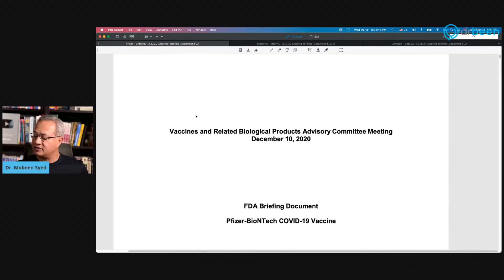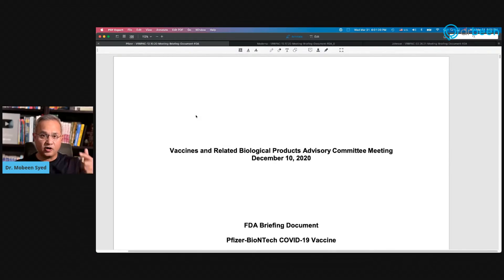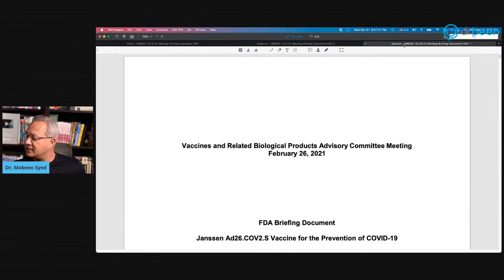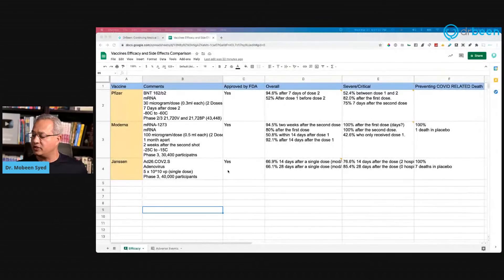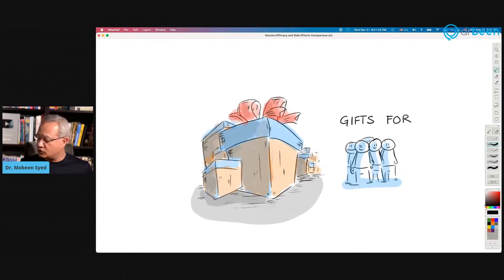So here we have the Pfizer-BioNTech trial results. We have gone over this in detail in the past. I've just put them together for comparison. Here is the FDA briefing document for Moderna, and this one is the FDA briefing document for Johnson & Johnson's Janssen vaccine. I have collected those data points here in an Excel sheet and illustrated them. So let's start.